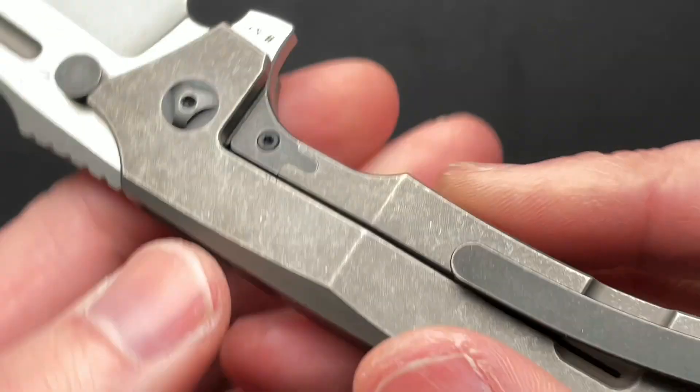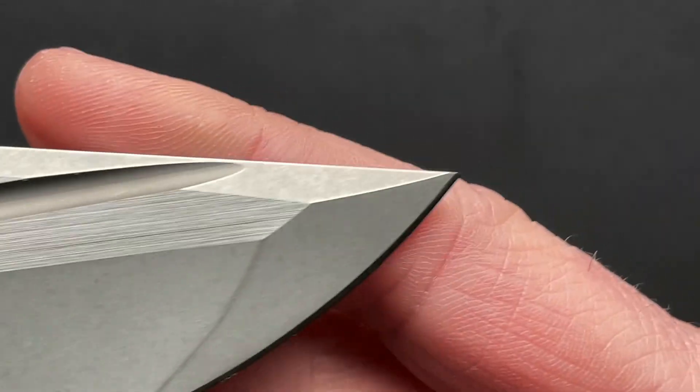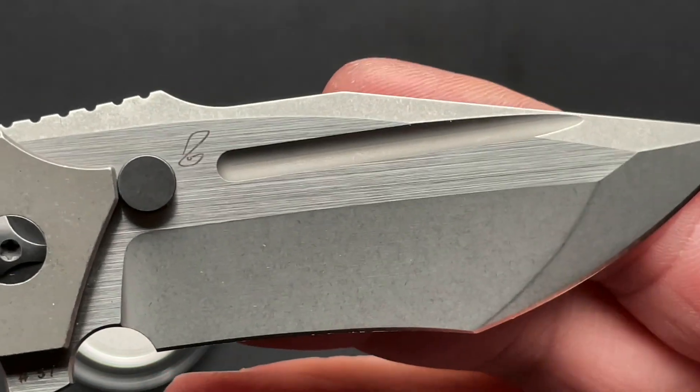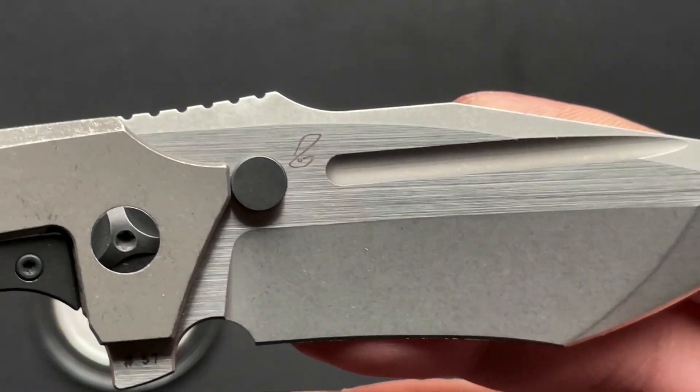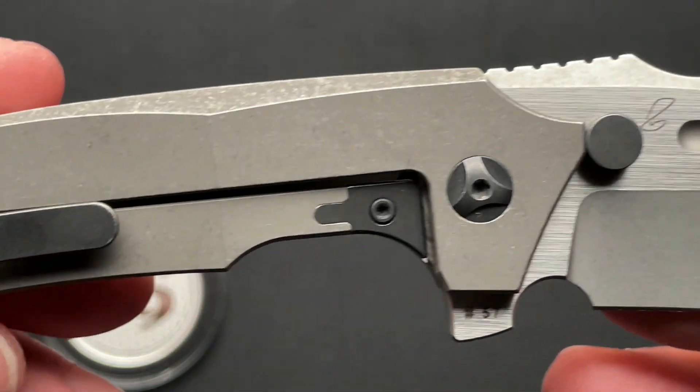So this is number 57, as it said on the card. They mark it right here on the flipper tab. Beautiful tanto grind with a recurve, which I know turns about half of the people off. But I love a recurve. But again, I don't sharpen my knives.